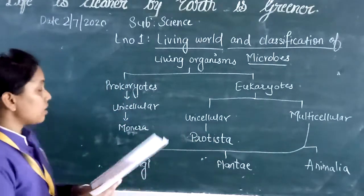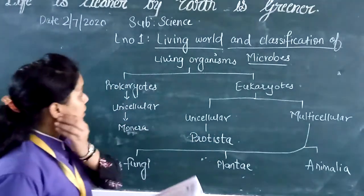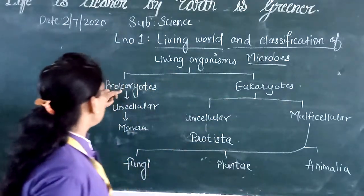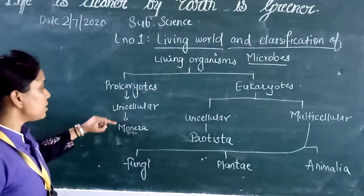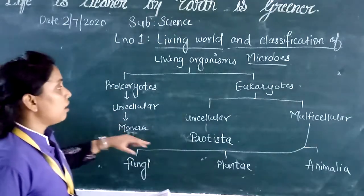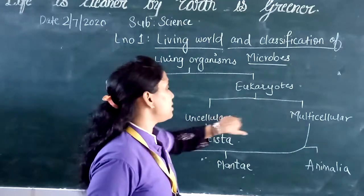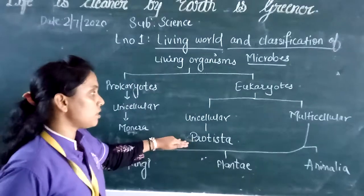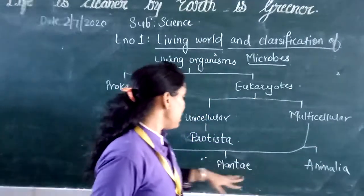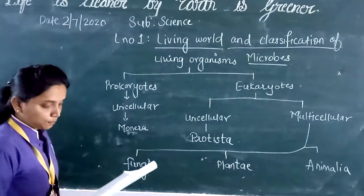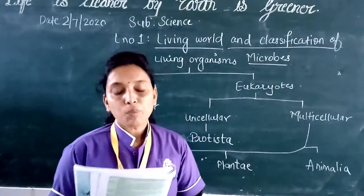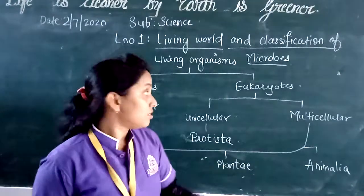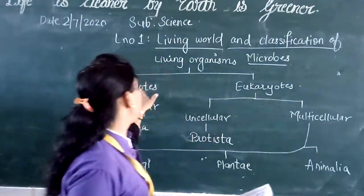For classification, Whittaker considered the following criteria. He divided living organisms into Prokaryotes and Eukaryotes. Prokaryotes are unicellular and belong to Kingdom Monera. Eukaryotes were divided into unicellular and multicellular groups. Unicellular eukaryotes belong to Kingdom Protista, while multicellular ones belong to Kingdoms Animalia, Plantae, and Fungi. The first criterion was complexity of cell structure — that is, Prokaryotic versus Eukaryotic — based on the presence or absence of a well-defined nucleus.